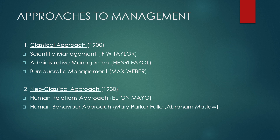The neoclassical approach was developed around 1930, in which the classical approach has been presented with some modifications. The neoclassical approach understands the importance of human resources in an organization. It has two basic pillars: the human relations approach by Elton Mayo through the Hawthorne experiments, and the human behavior approach developed by Mary Parker Follett, McGregor, Abraham Maslow, and others.